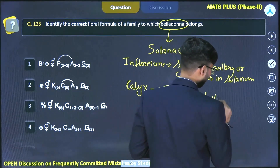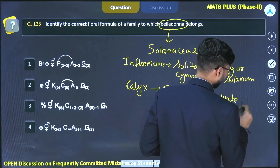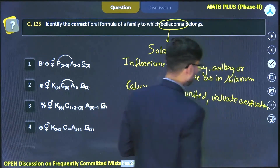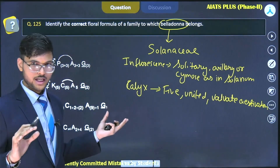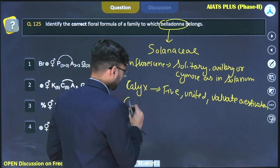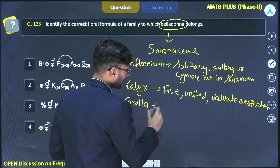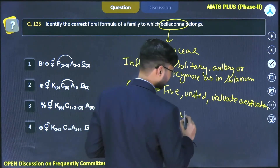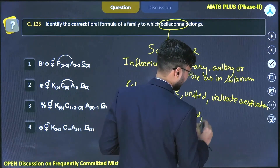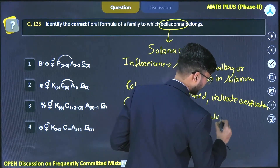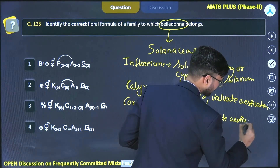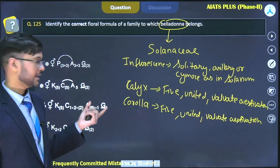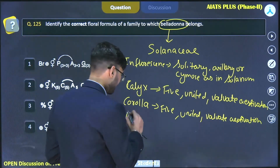The corolla also has five petals which are united and also show valvate aestivation. The androecium consists of five stamens which are free but fused with the petals.